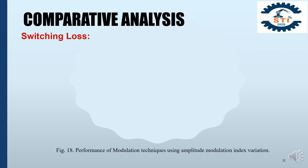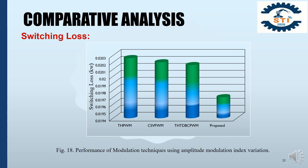Another parameter for comparative analysis is switching losses. Figure 18 represents the switching losses of different modulation techniques. From this figure, it can be said that our proposed switching technique provides less switching losses than other mentioned topologies. The highest switching losses are offered by CHPWM. The switching losses of the proposed switching technique are lower than all other techniques and almost 2.58% lower than the THD-PWM techniques.